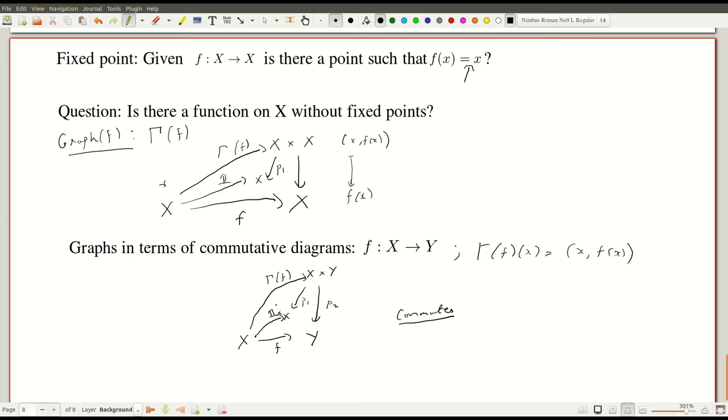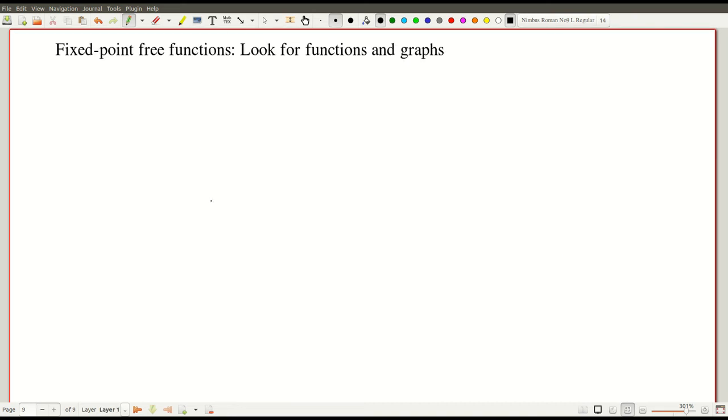So this is a good warm-up. So we want to describe whether it's a function without fixed points. A function without fixed points can be characterized in terms of its graph using the diagonal. So let me just write down the diagonal here and then we will see what the commutative diagram is for a function without fixed points. So diagonal is just pairs x, x, and the x belongs to X. So let's formulate a function being fixed point free.